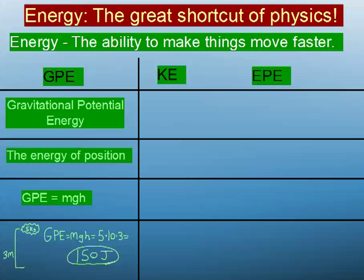So the first one is GPE, which stands for gravitational potential energy. And what that means is the energy of position above the ground. The higher you have something above the ground, or the chunkier it is, the more gravitational potential energy it has.